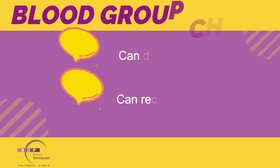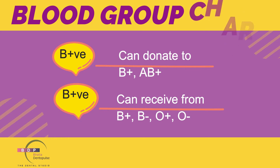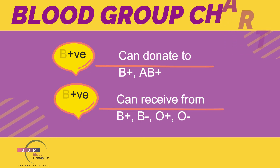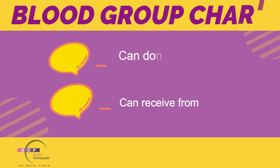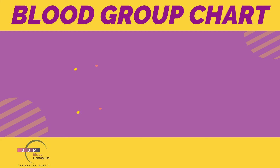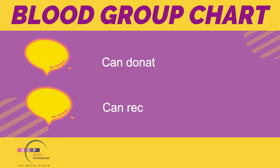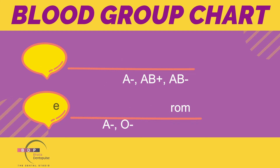Moving on to B positive: B positive can give blood to B positive and AB positive, and can receive from B positive, B negative, O positive, and O negative. AB positive can only give blood to AB positive and can receive blood from everyone — that is why AB positive is called the universal recipient. Then for negative blood groups: A negative can give to A positive, A negative, AB positive, and AB negative, and can receive blood from A negative and O negative.